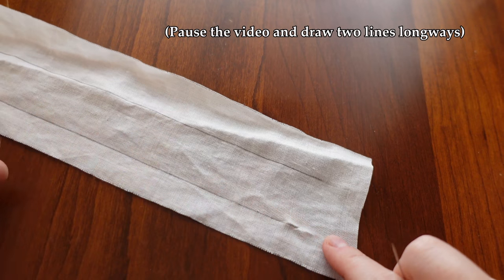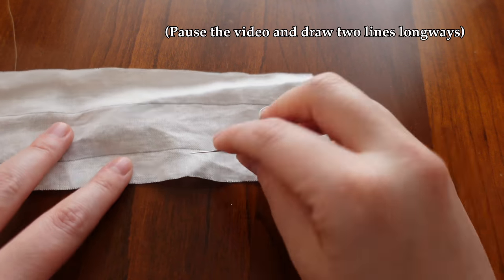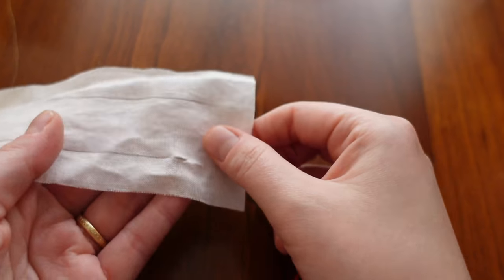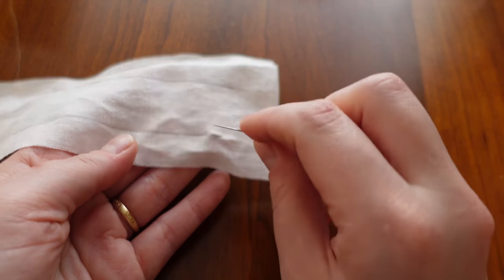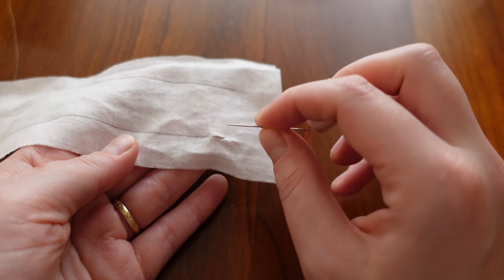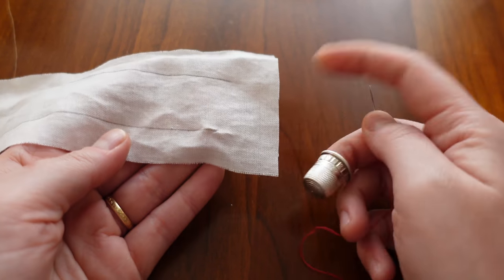Now that we have our lines drawn on our fabric let's practice using our thimble for real. So I use my non-dominant hand to stabilize the fabric and then my dominant hand to actually hold this needle and then push it through the fabric.